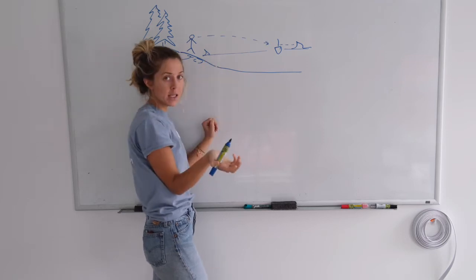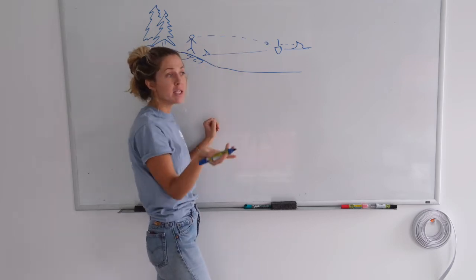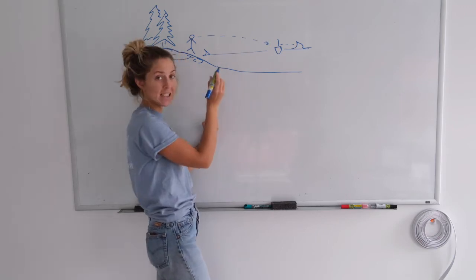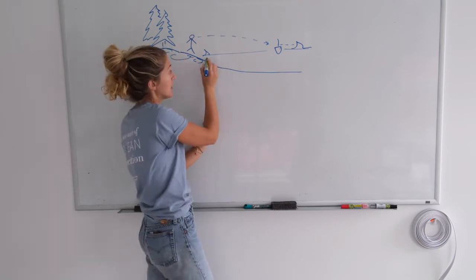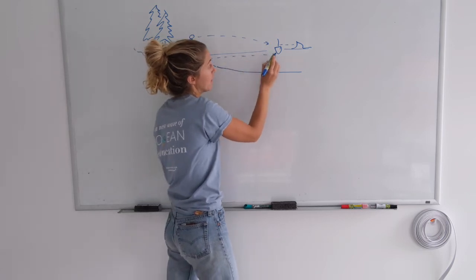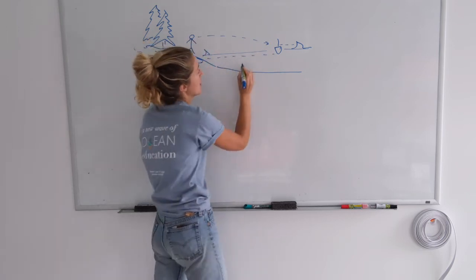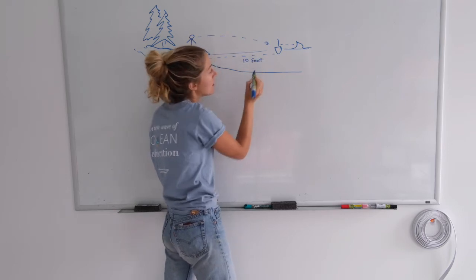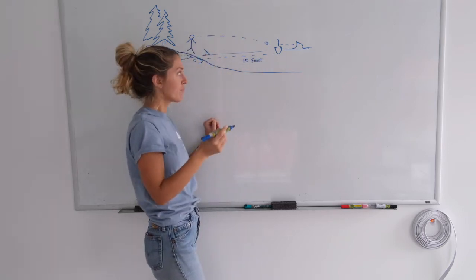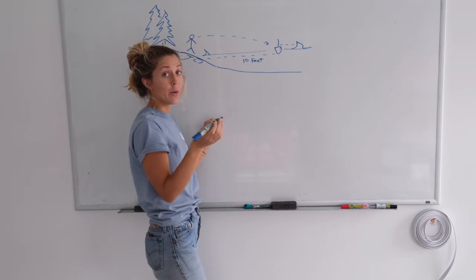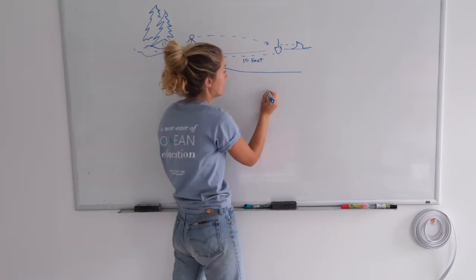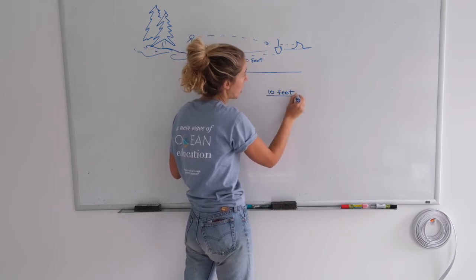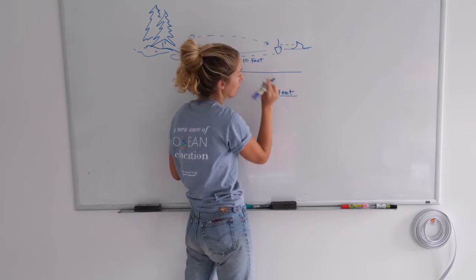From that you'll have a time—maybe it takes 15 seconds. The next thing you'll do is estimate the distance that the wave traveled. Maybe that was 10 feet. So your wave speed would be 10 feet per 15 seconds.